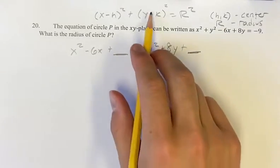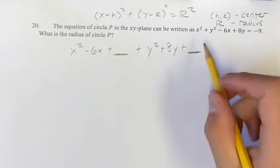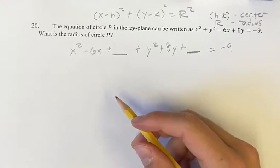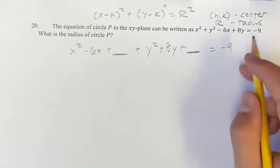And this little triplet is going to turn into y minus k squared. And this is going to be equal to negative 9, and to make sure both sides of the equation are still equal, we have to add what we added on this side to this side.